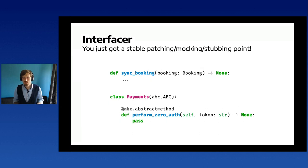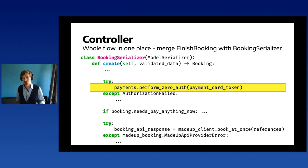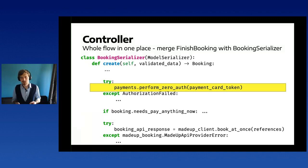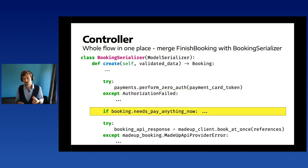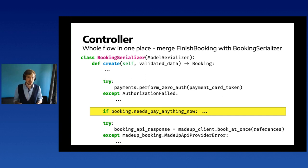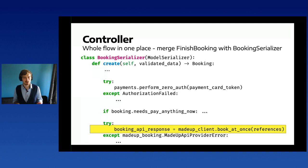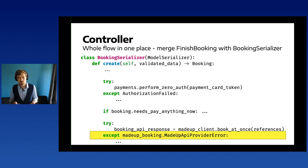In the first line, we use the payments interface to perform zero authentication, then handle errors with the newly introduced exception. If we need to pay anything, look at the difference: before we had 'booking.total.amount'; now we just use a property 'if_we_need_to_pay_anything_now' — more expressive. We go forward, call the booking provider, handle errors there, and that would be it for the booking serializer.